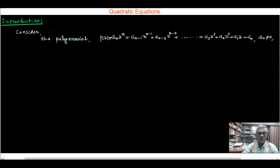Now consider the polynomial p(x) = a_n x^n + a_(n-1) x^(n-1) + ... + a_3 x^3 + a_2 x^2 + a_1 x + a_0 equal to a_0 and a_n is not equal to 0.